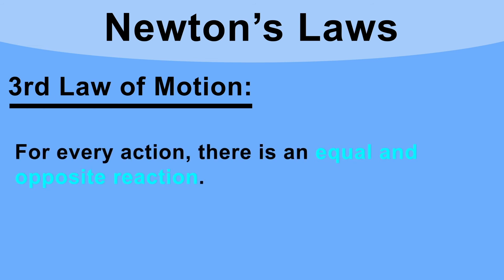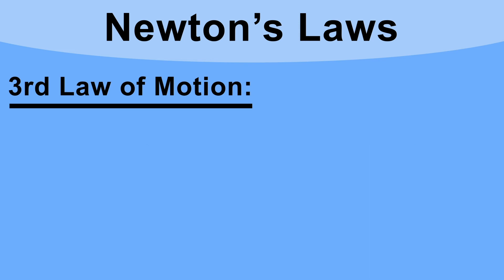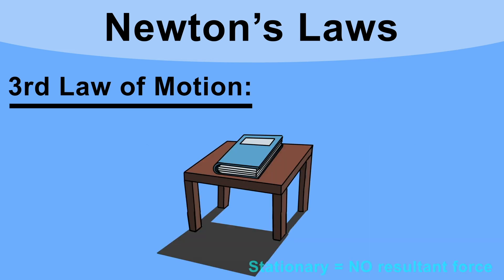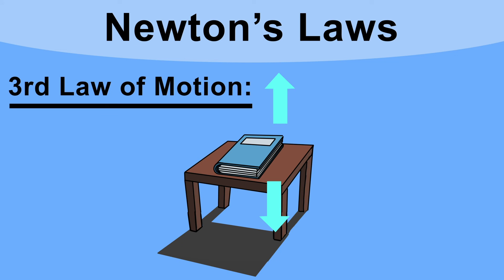Finally, Newton's third law states that for every action there is an equal and opposite reaction. Consider a book resting on a table. The book is stationary, so there is no resultant force. The book has weight — its mass times gravity — acting downward, so there must be an equal and opposite reaction force upward from the table. The table pushes on the book with a force equal to the book's weight.